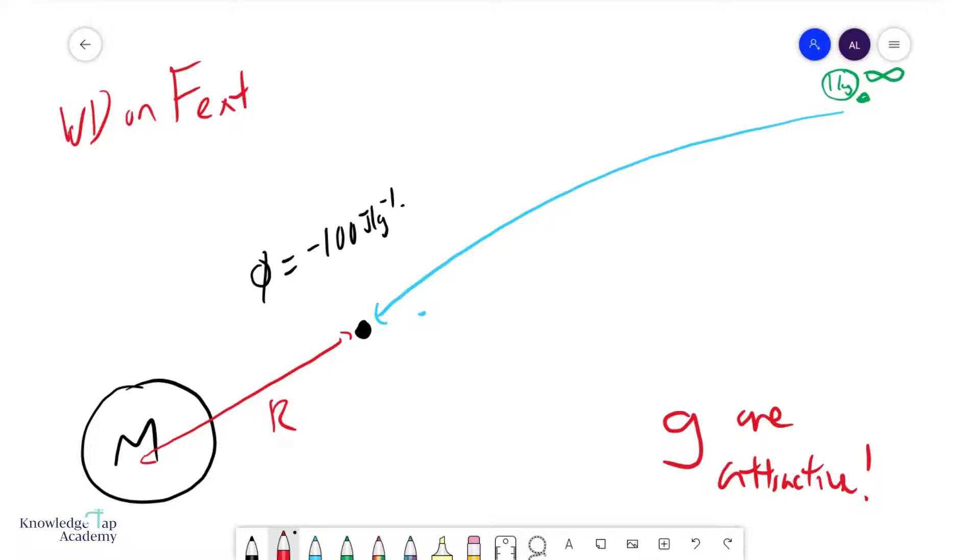And so the work done by this external force will no longer equal to the change in the GPE per unit mass. But it will equal to the change in GPE per unit mass plus the change in KE per unit mass, which is not what we want.